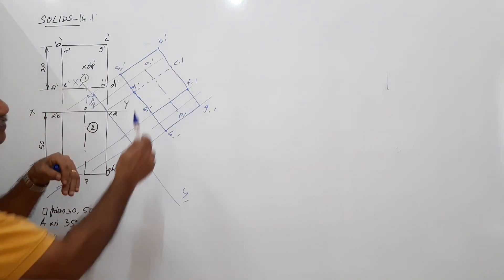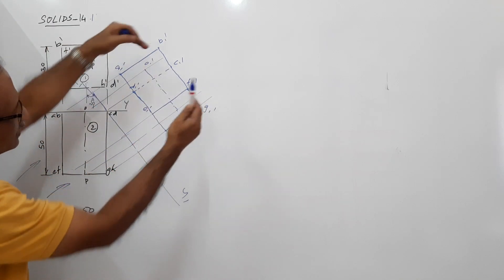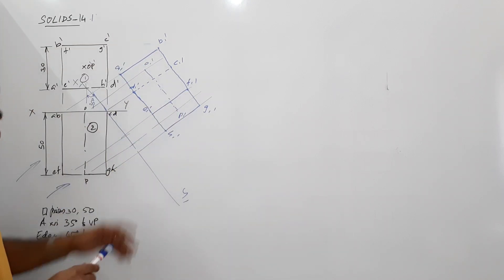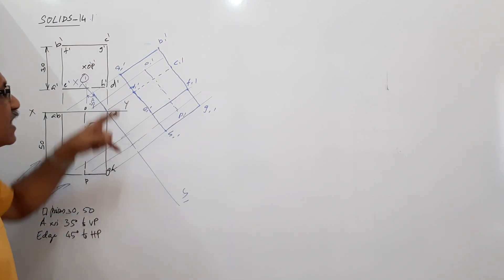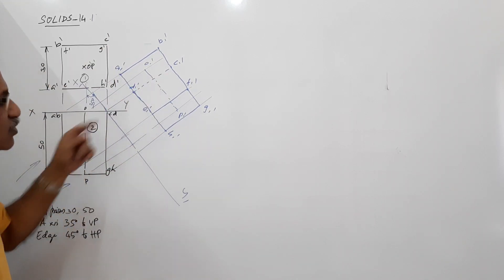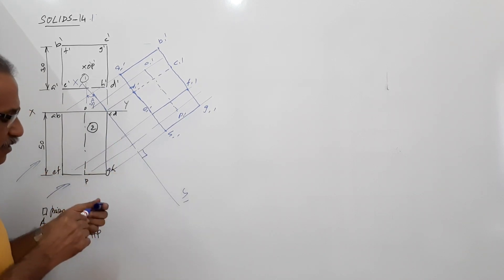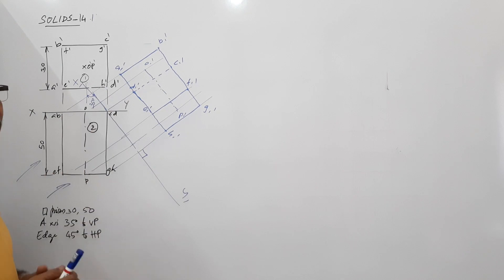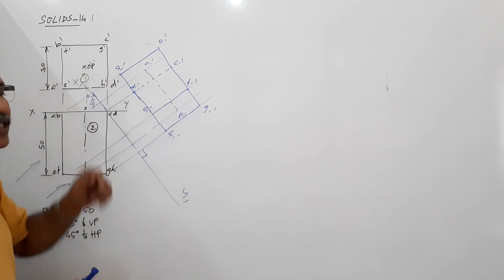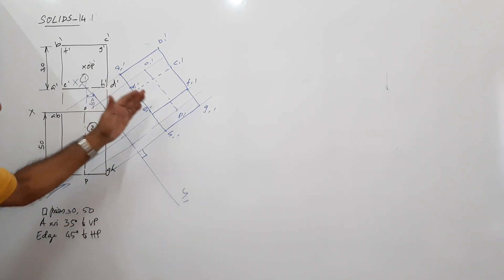Plan, XY, elevation. Now this is not sufficient, because the face CD on which it is resting is now perpendicular to HT — you can see it is perpendicular to HT. So this is not sufficient. What you have to do is draw a new plan for this elevation.